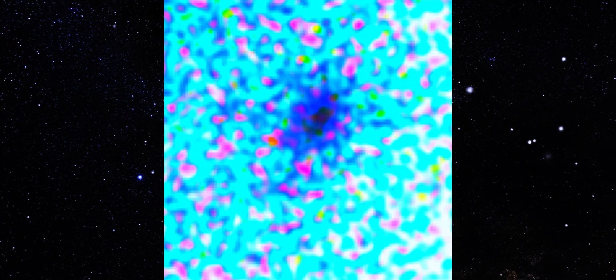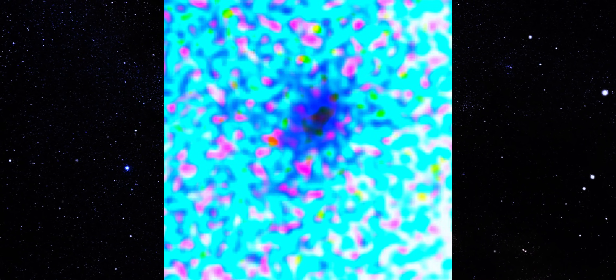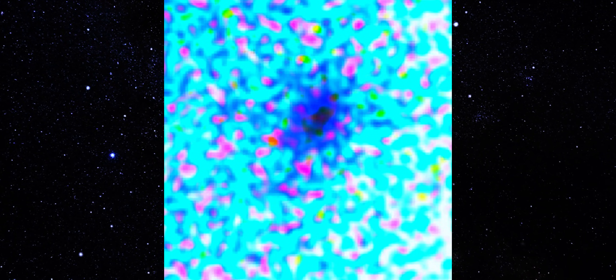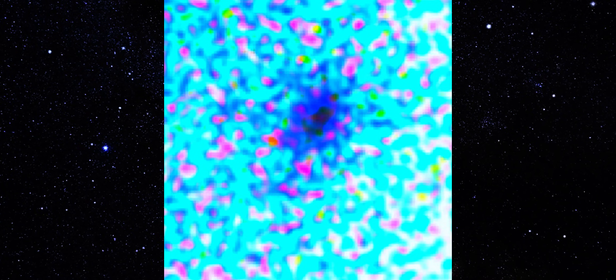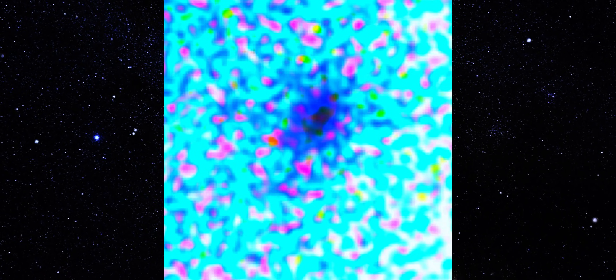Now, the same data is viewed through color separation. Nothing added, no sharpening. Just the channels weighted differently so contrast can emerge. And this is where the structure stops being ambiguous. The core remains compact, but one side darkens and stretches outward. Not randomly. Not symmetrically.